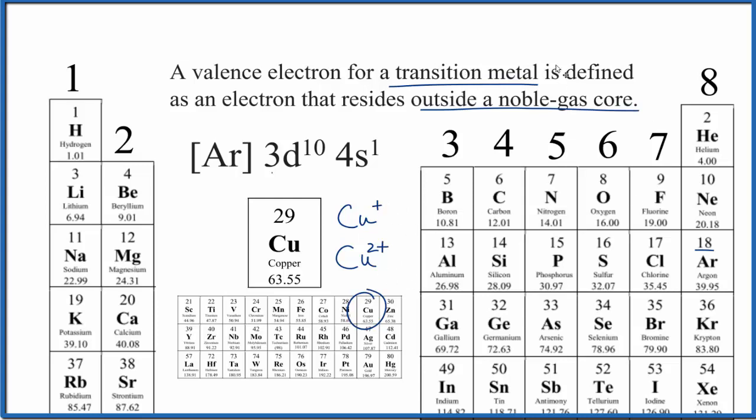But in answer to our question, based on this definition, copper has 11 valence electrons. This is Dr. B, thanks for watching.